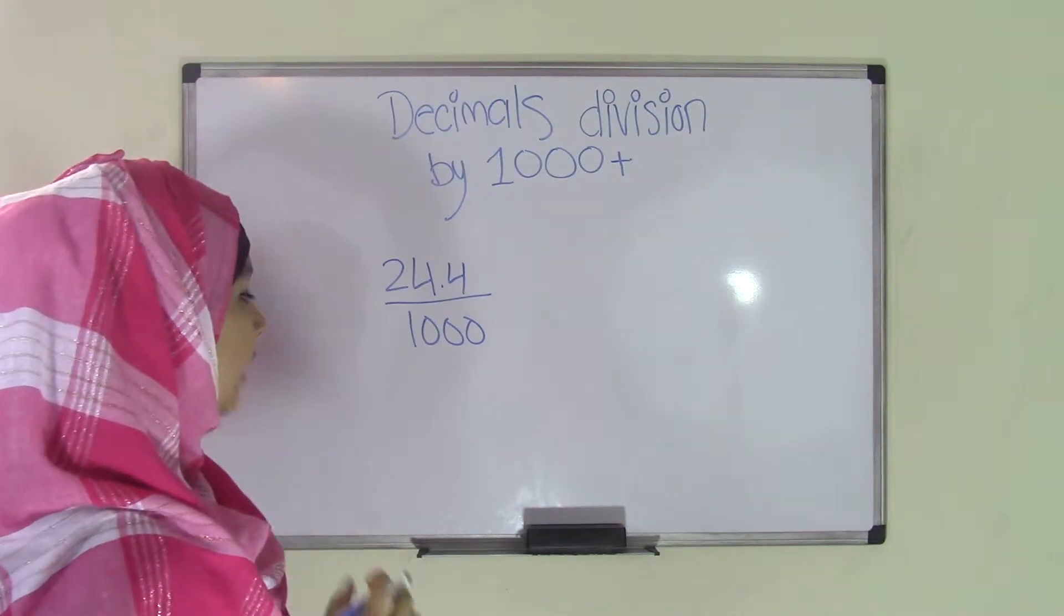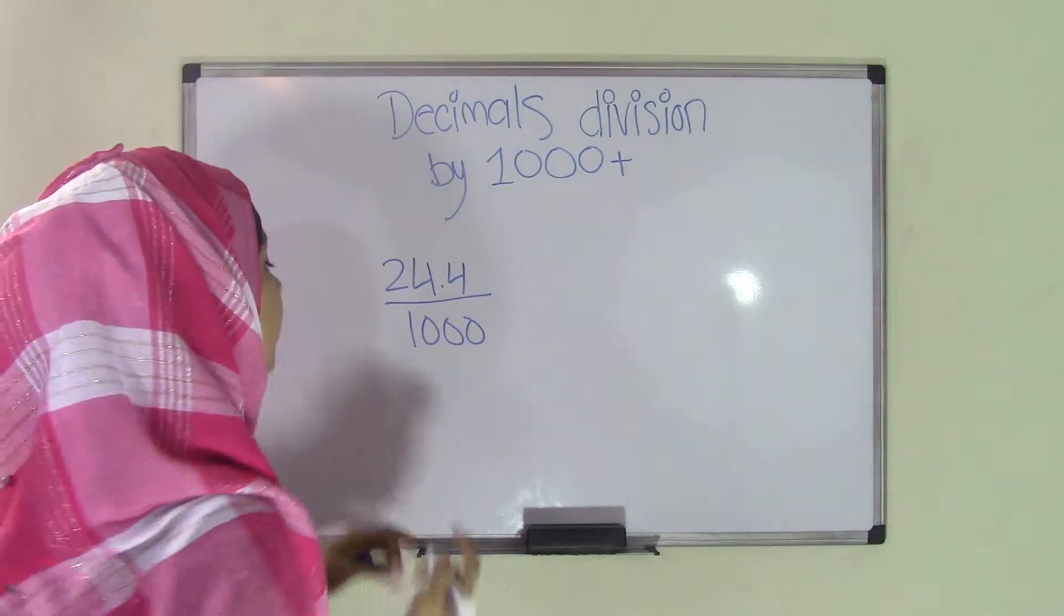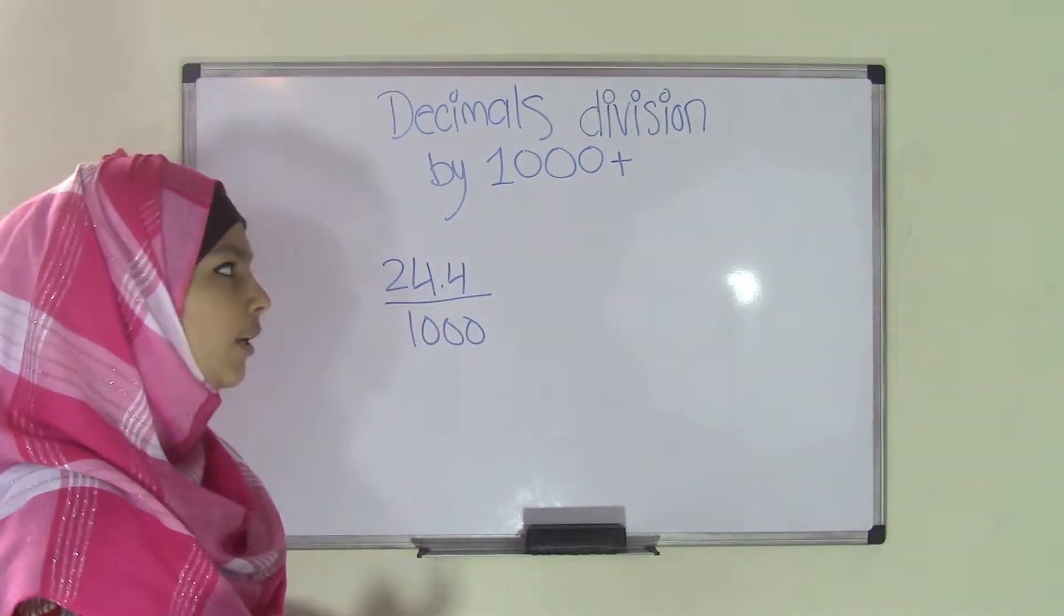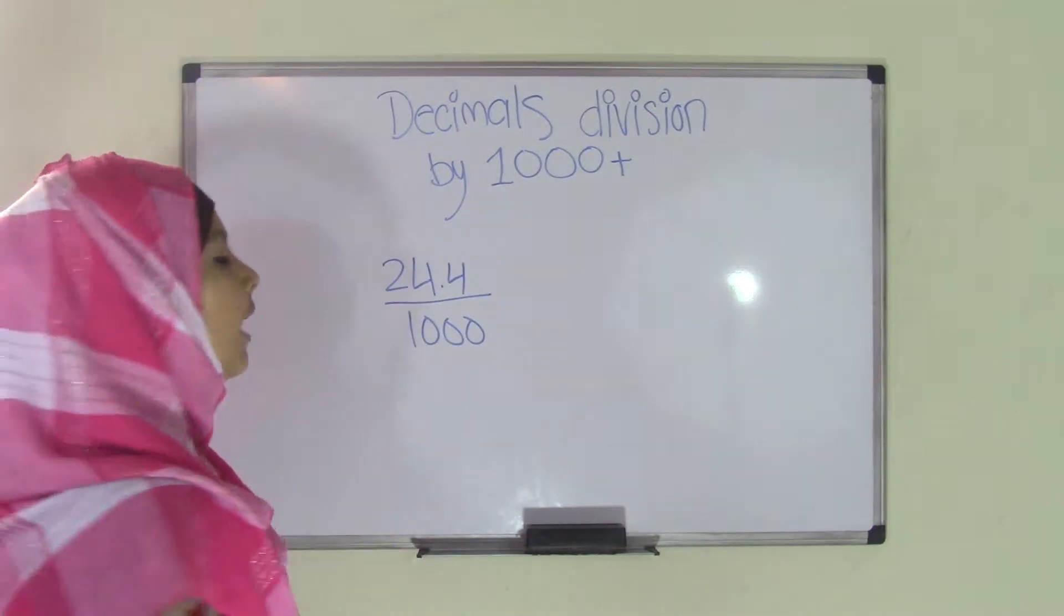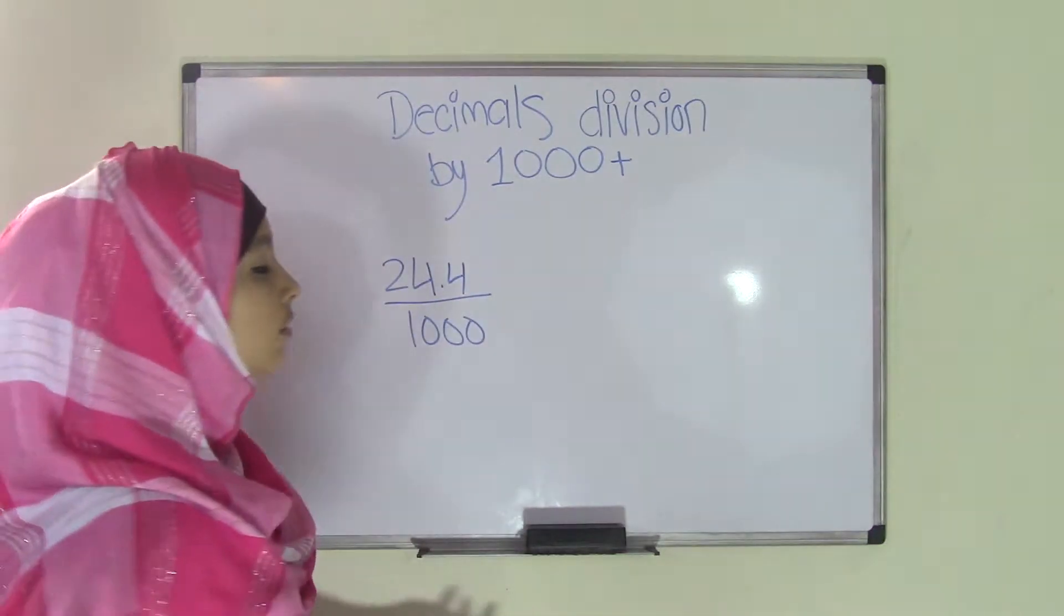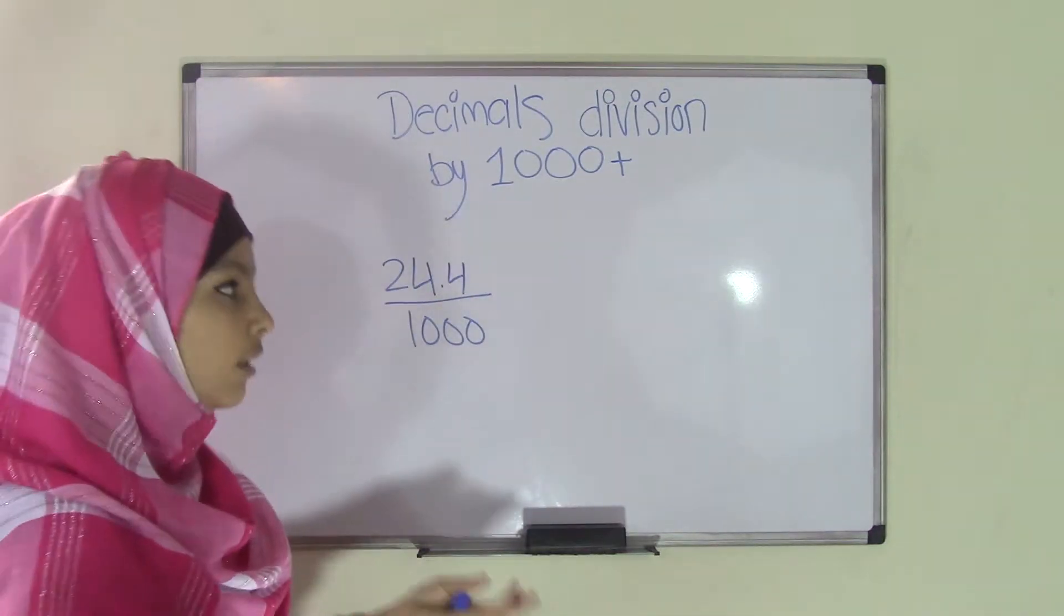So the first thing you do is, I know you could use the zero method and count the number of zeros and then move it. But that's not really logical. I mean, you don't know why and how you did that. So there is another more logical way to do this and find the correct quotient.